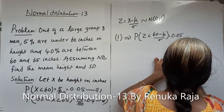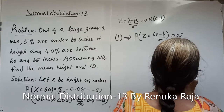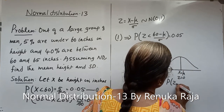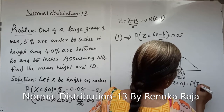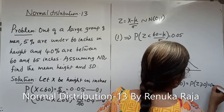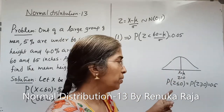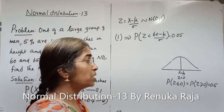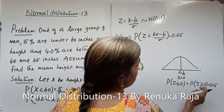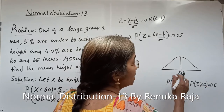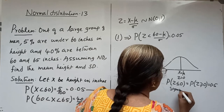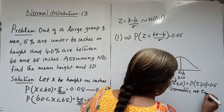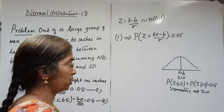We drew the graph of the standard normal curve, and we know it is symmetric at z equals 0. That is, at x equals μ, which means z equals 0, so that probability z less than or equal to 0 equals probability z greater than or equal to 0, equals 0.5. The total area under the curve from minus infinity to infinity equals 1. The standard normal is symmetric at z equals 0.